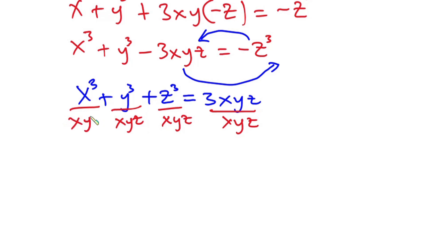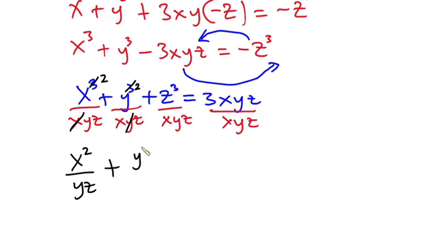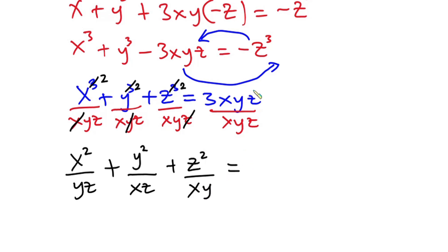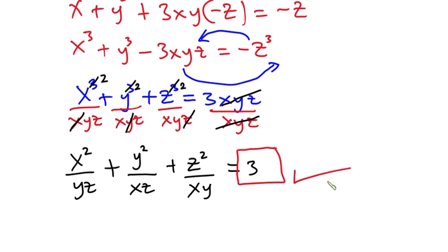Dividing through by xyz: this x reduces the power by one, so we have x to the power 2 over yz, plus this y reduces the power by one, so we have y to the power 2 over xz, plus this z reduces the power by one, so we have z to the power 2 over xy, and this is equal to 3. So guys, as you can see, x to the power 2 over yz plus y to the power 2 over xz plus z to the power 2 over xy equals 3. I hope you enjoyed watching this video — please give it a thumbs up and don't forget to subscribe. Thanks a lot for watching, see you again in the next video.